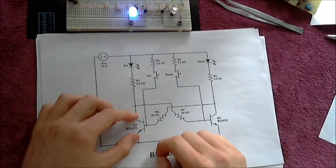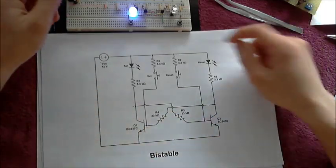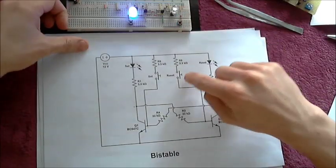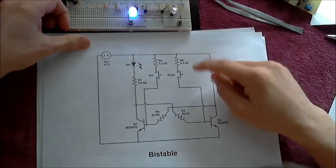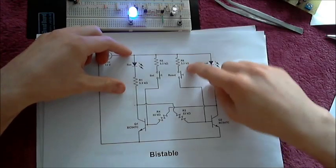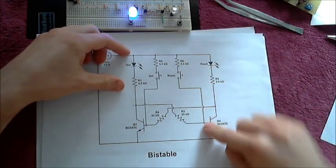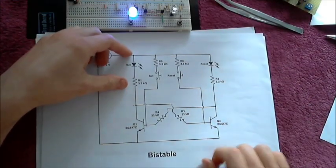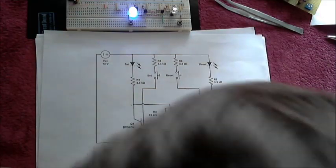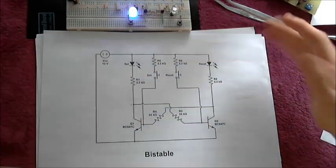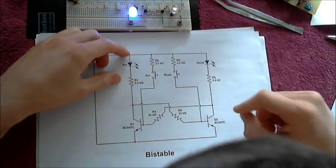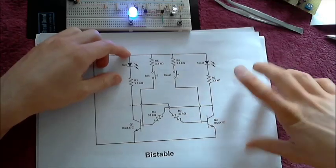When the collector is high, this supplies through this resistor a good current to the first base, which turns the transistor on. Now when I push the switch, which is the reset switch, what happens is I supply a burst of current to the base of Q2. This transistor turns on momentarily and that's enough.